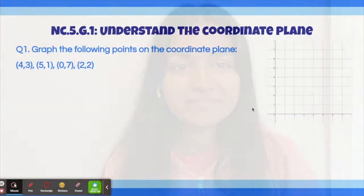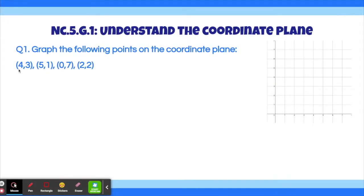Let's start with the first question. Graph the following points on the coordinate plane: (4, 3), (5, 1), (0, 7), and (2, 2). I'll give you guys a few seconds to solve this problem, and if you need more time, feel free to pause.